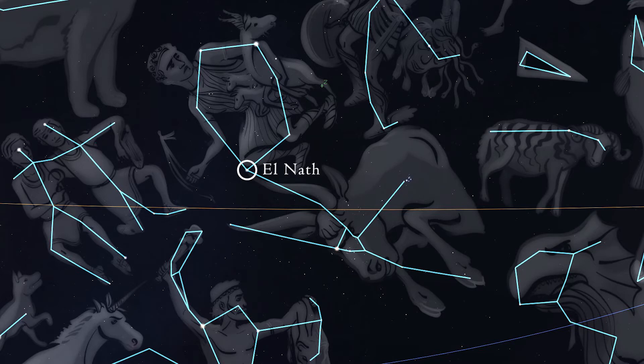Anyway, once you've found Elnath, you've found Auriga. That's the star shared by the two constellations.